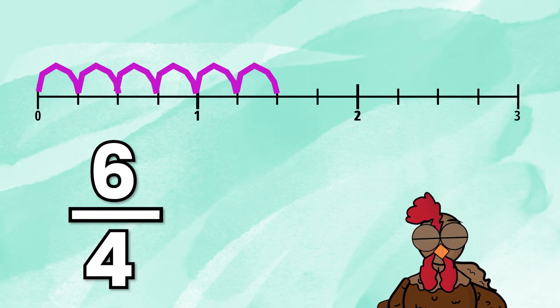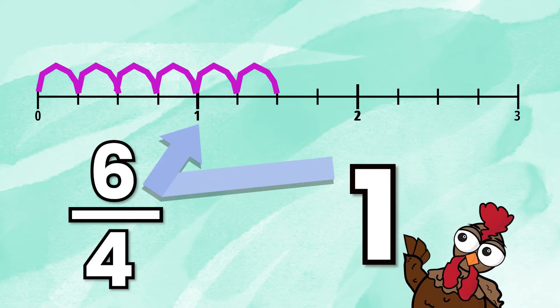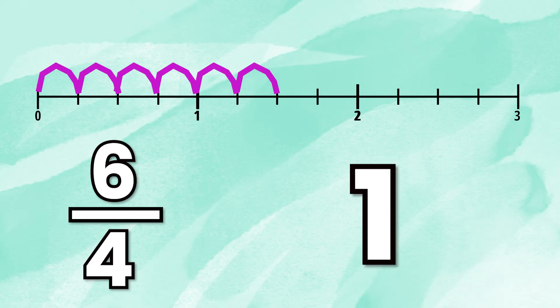Now we can see that we went past one whole. So our whole number is going to be one. Now we have to look at what fraction we went past that one whole. We went past one whole by two fourths. So our mixed number is one and two fourths.